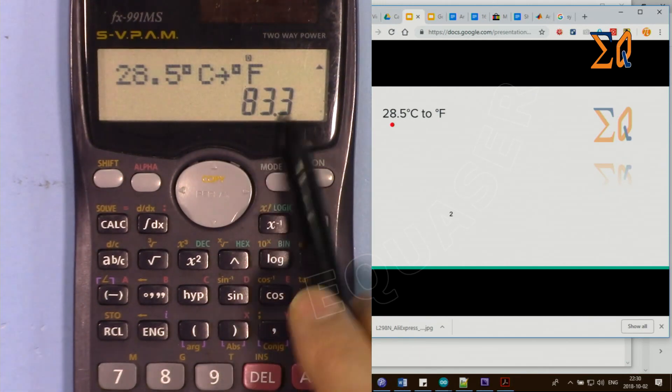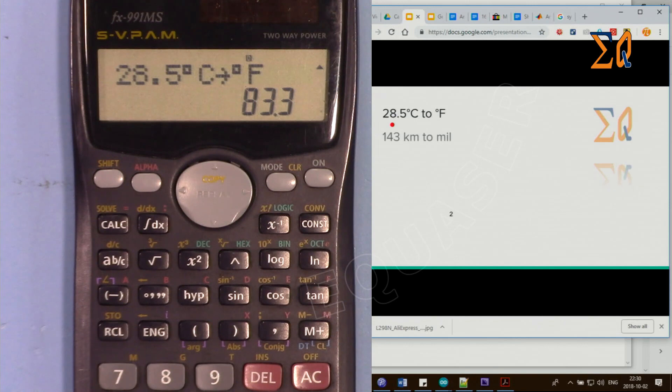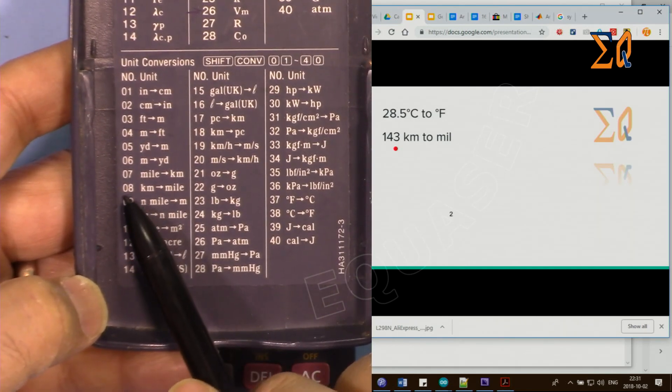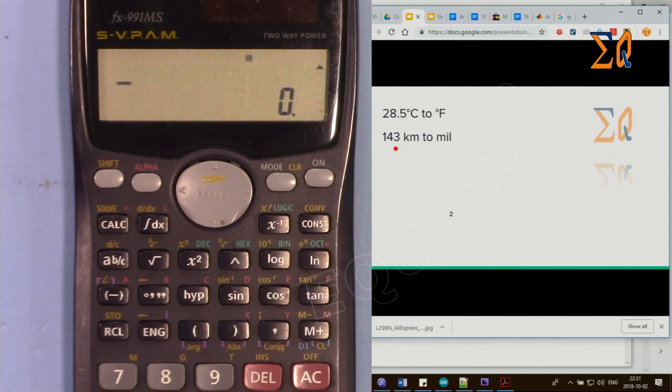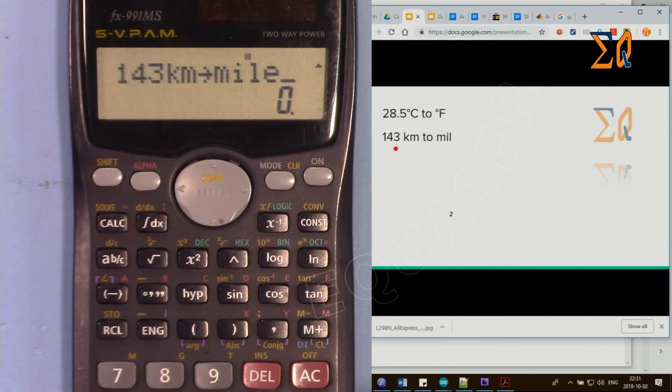Let's say you want to convert 143 kilometers to miles. Here, kilometers to miles is 08. All clear. 143, and then shift, convert, 08. Now it says kilometers to mile, plus, equal. So that is 88.85 miles.